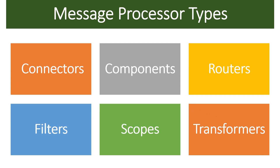Talking about the types of message processors available in MuleSoft, there are several categories, though many of them overlap. For example, connectors contain certain components, and a group of components makes one connector. We will cover connectors, which connect different types of applications; components, which are basic building blocks; routers; filters; scopes; and transformers. These are the commonly used types of message processors and I will explain each one.